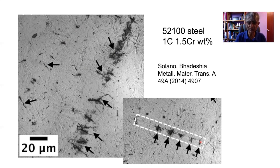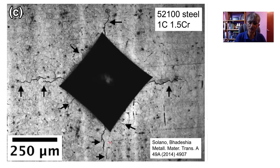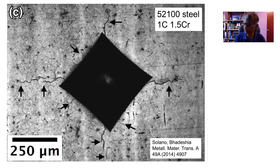If I take the same material and put a hardness indent on it, then the surroundings will crack spontaneously. The scale here is 250 micrometers and the martensite plates are of the order of 30 or 40 micrometers in length.